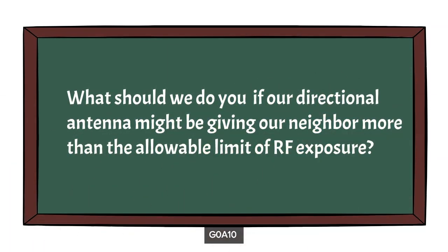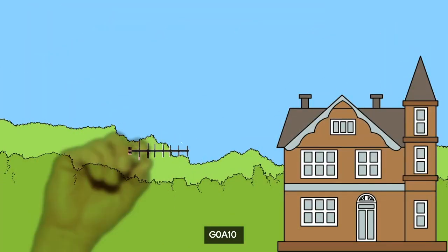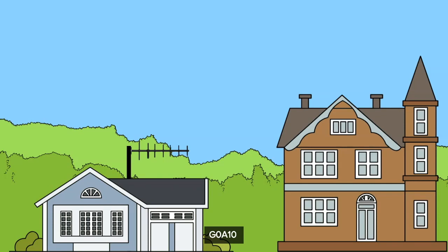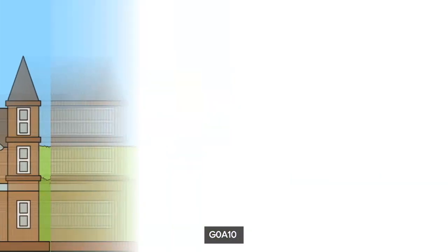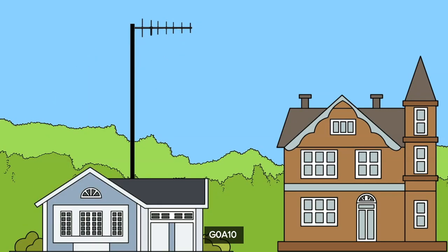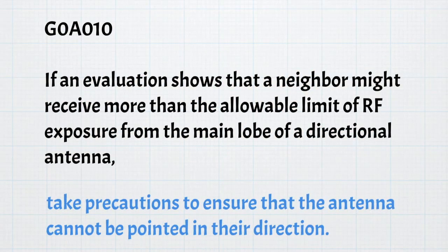For safety, we also need to ask what we should do if our directional antenna might be giving our neighbor more than the allowable limit of RF exposure. For example, if a Yagi antenna is not quite high enough, it may point toward a neighbor's house. After realizing the problem, the solution is to get more antenna mast and elevate it above the house so everyone is safe. For the exam, if an evaluation shows a neighbor might receive more than the allowable limit from the main lobe of a directional antenna, take precautions to ensure that antenna cannot be pointed in their direction.